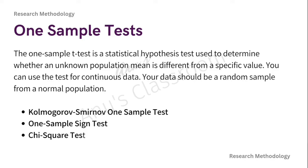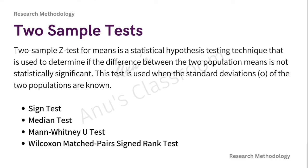All these tests are done for testing of hypotheses, which we saw earlier as the best way to perform research. Next, we come to two sample test. One sample uses the t-test, whereas two sample uses the z-test. The two sample z-test is a statistical hypothesis test used to determine if the difference between two population means is not statistically significant. For example, we can use it to see if there is any significant difference in the mean salary of male or female doctors in India.